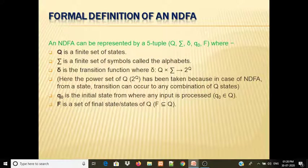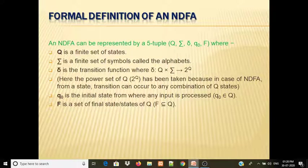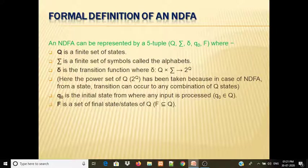Del is used for transition functions. In Deterministic Finite Automata, the transition function del maps Q cross sigma to Q — meaning for one state and one input symbol, you get a unique next state. But in Non-Deterministic Finite Automata, the transition function del maps Q cross sigma to 2 to the power Q.